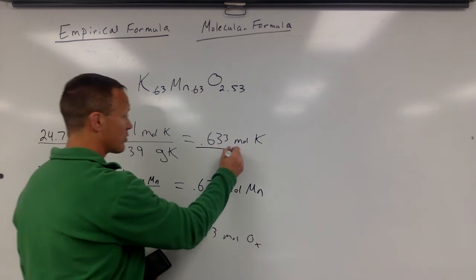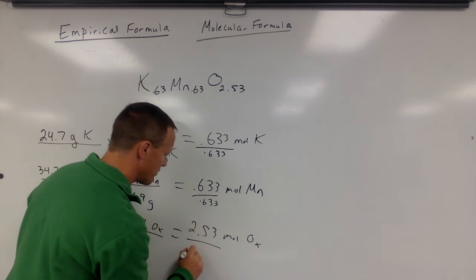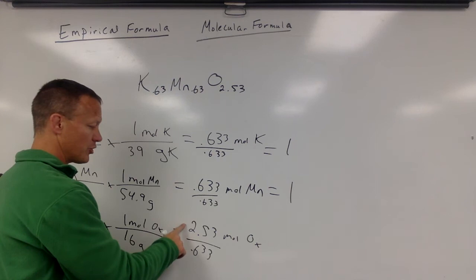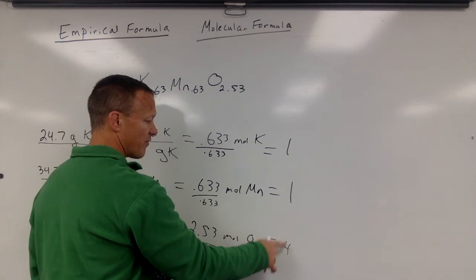So the easiest way is to divide all of them by the smallest. So divide this one by 0.633, divide this one by 0.633. We're just trying to figure out what the ratio is of one to the other. When we do that, this becomes a 1, this is a 1, and 2.53 divided by that is a 4.